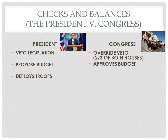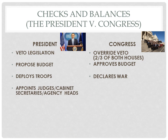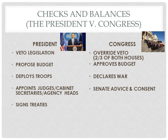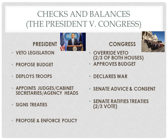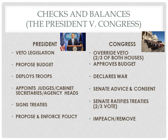The president can deploy troops without Congress's approval, but to get a declaration of war, he must go through Congress. The president can appoint federal judges, cabinet secretaries, and agency heads within the bureaucracy, but all of those people have to be confirmed through the Senate Advice and Consent power. He also has the ability to sign treaties with foreign diplomats, but those treaties don't become official until the Senate ratifies them with a two-thirds vote. And he is responsible for proposing and enforcing policy, but if he doesn't do it effectively or goes outside the boundaries of the Constitution, he can be impeached or removed by Congress.